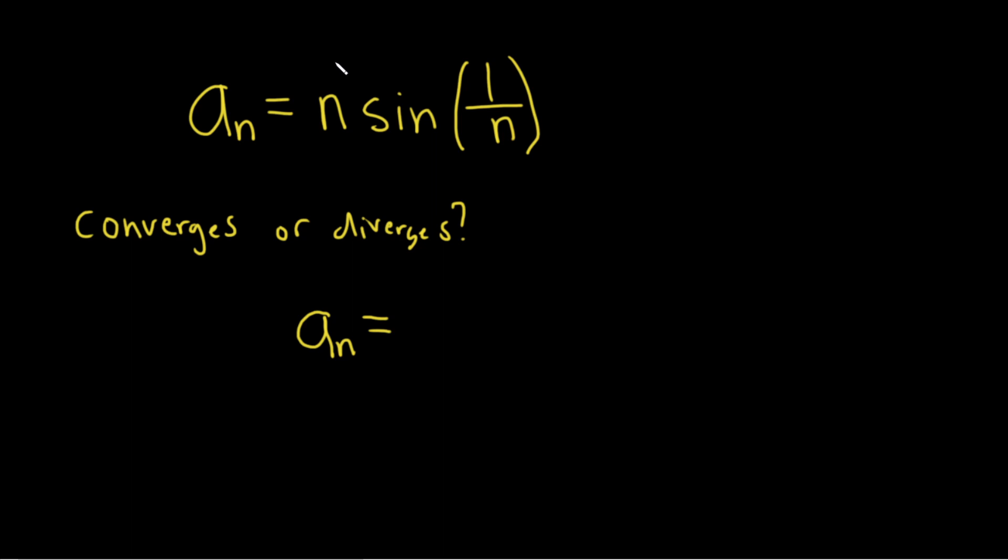Right now if you look at this, as n goes to infinity, n here goes to infinity, and 1 over n goes to 0. So this piece here approaches the sine of 0, which is 0. So we have some type of infinity times 0 situation.